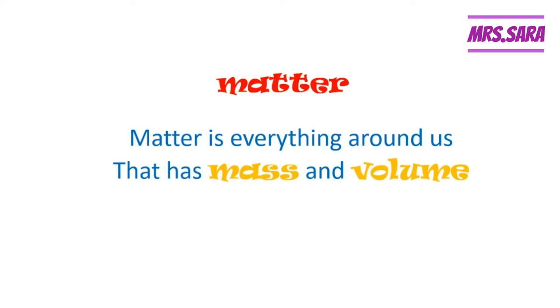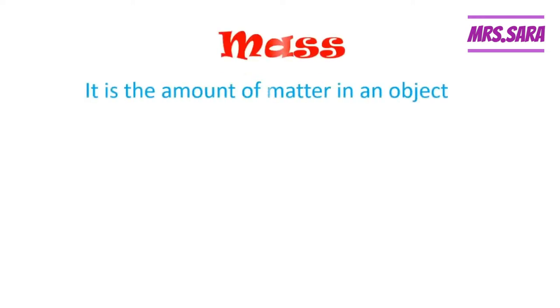So matter is everything around us. Matter has mass and volume. So matter is everything around us that has mass and volume. What is the meaning of mass?